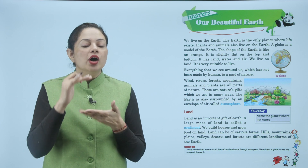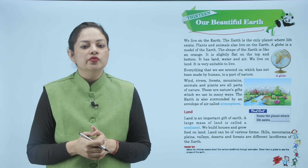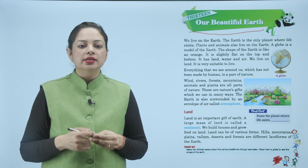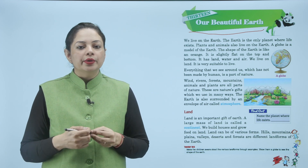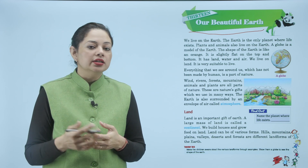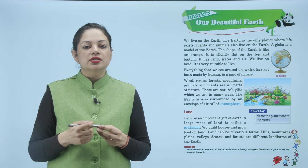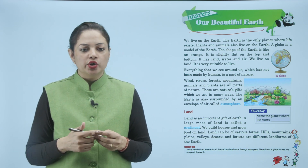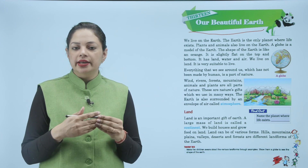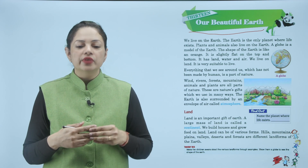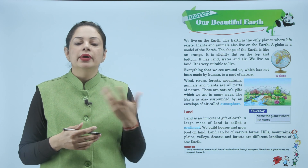Earth की shape orange जैसी होती है और earth पर land, water और air मिलती है। We live on land and we can easily live here because water and air are available on earth. Everything that we see around us which has not been made by human is a part of nature — ऐसी चीजें जो human being ने नहीं बनाई, उनको a part of nature कहते हैं।